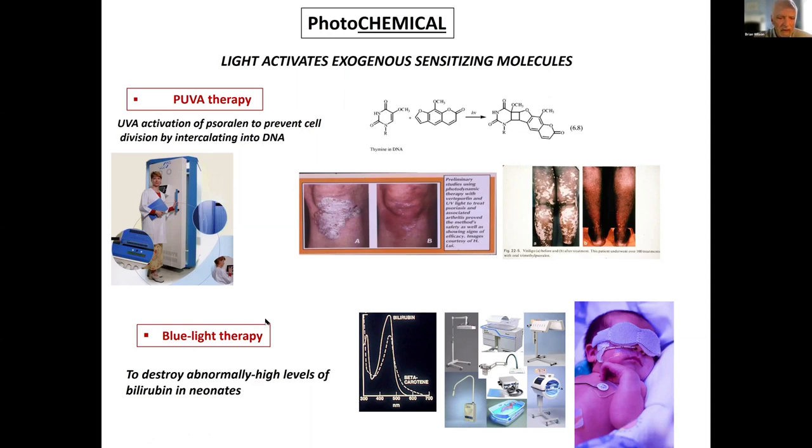Blue light therapy is used to destroy abnormally high levels of bilirubin in neonates. Often, premature infants don't have fully functioning body systems. One of the problems is if the liver is not fully functioning, they can accumulate bilirubin, and high levels of circulating bilirubin can cause neurological damage. So these babies are exposed to simply blue light, and the blue light is absorbed by the bilirubin and is photo-degraded and broken down into harmless molecules. That's used as a very standard treatment for premature infants.